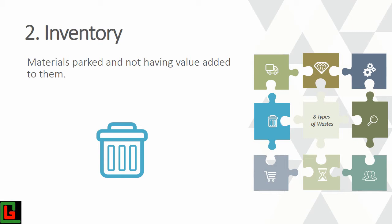Another problem with high inventory is that it hides problems. For example, if process one has something go wrong and there is a large work-in-process inventory sitting between process one and process two, you might not know about that problem soon enough. With less inventory, problems become visible immediately.